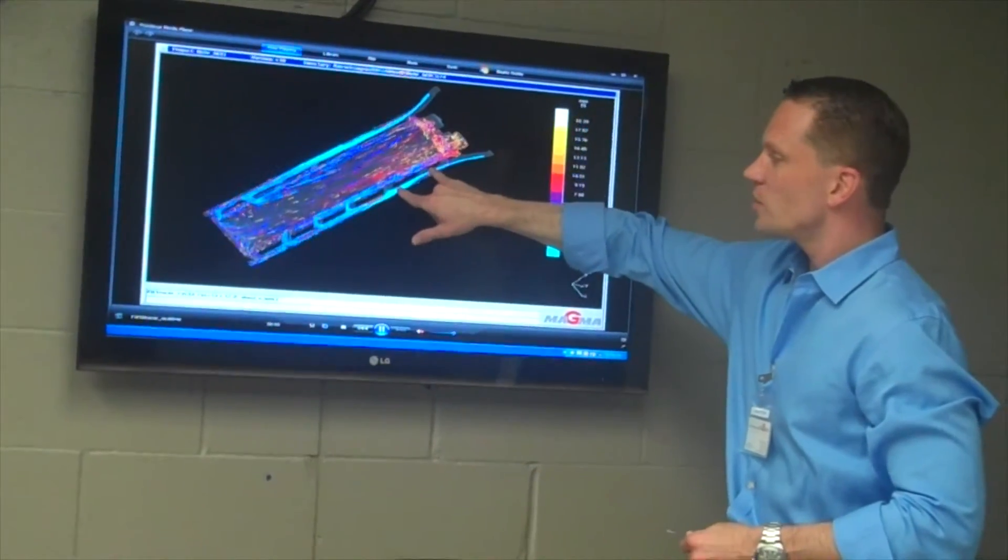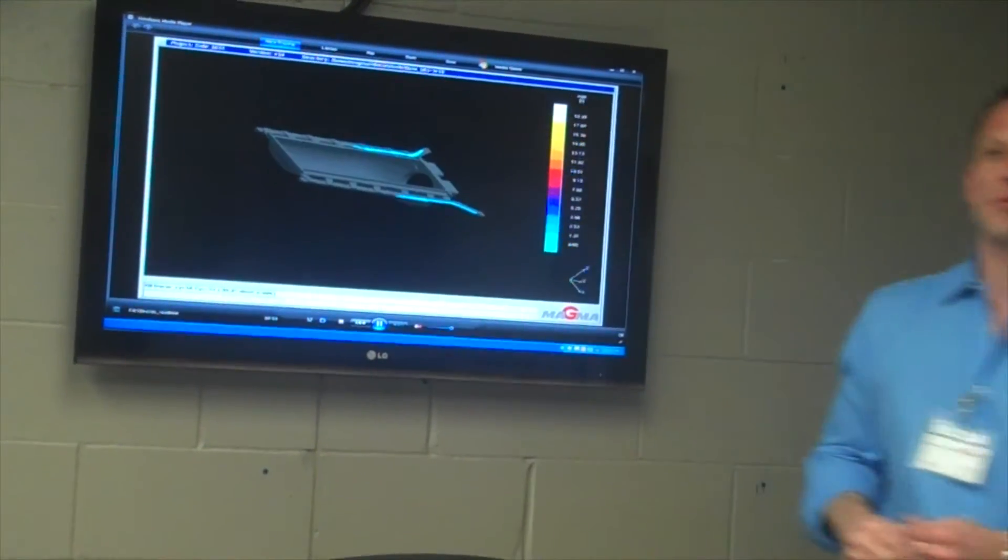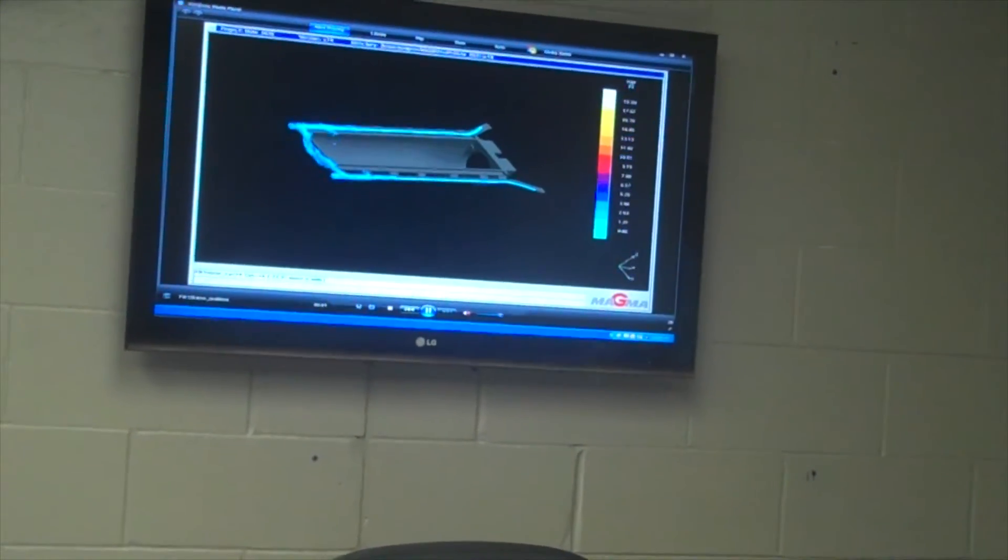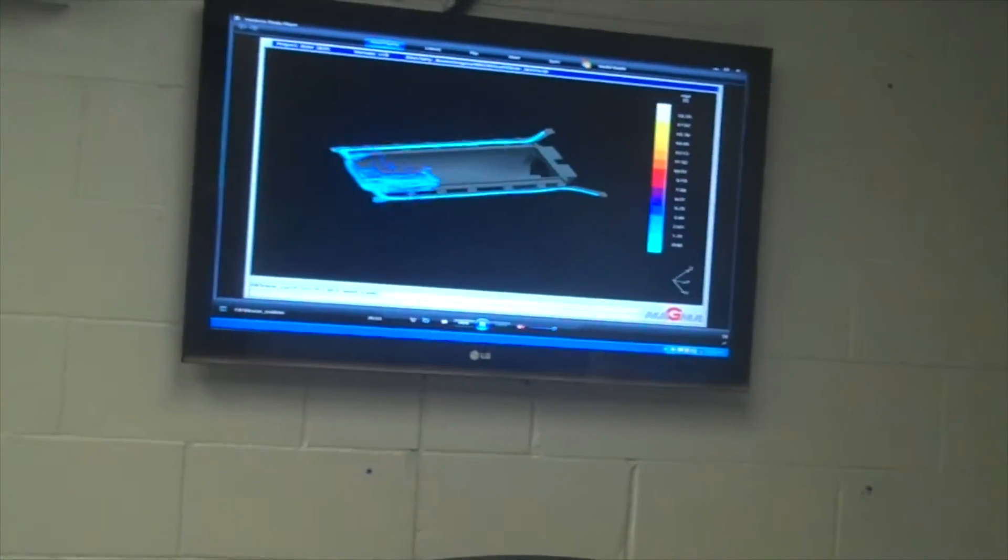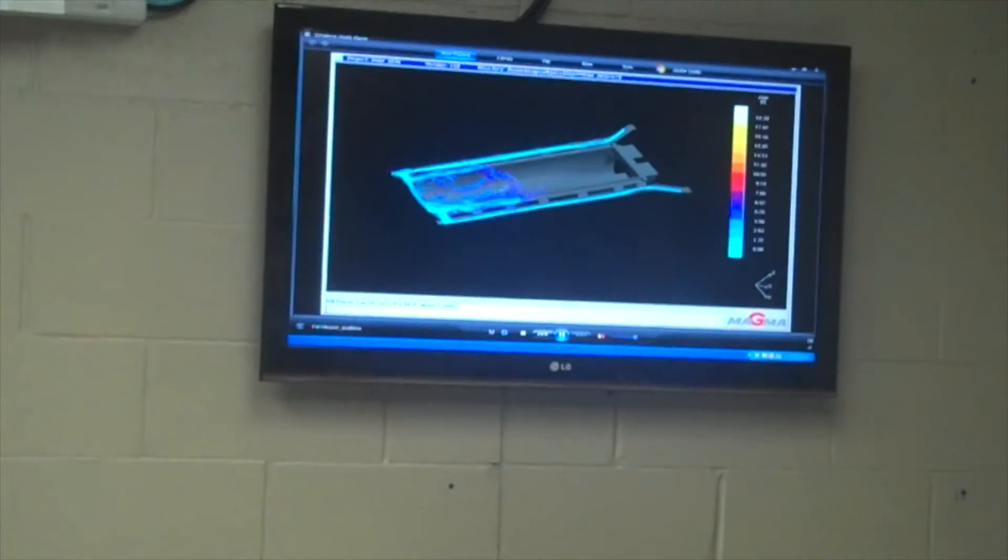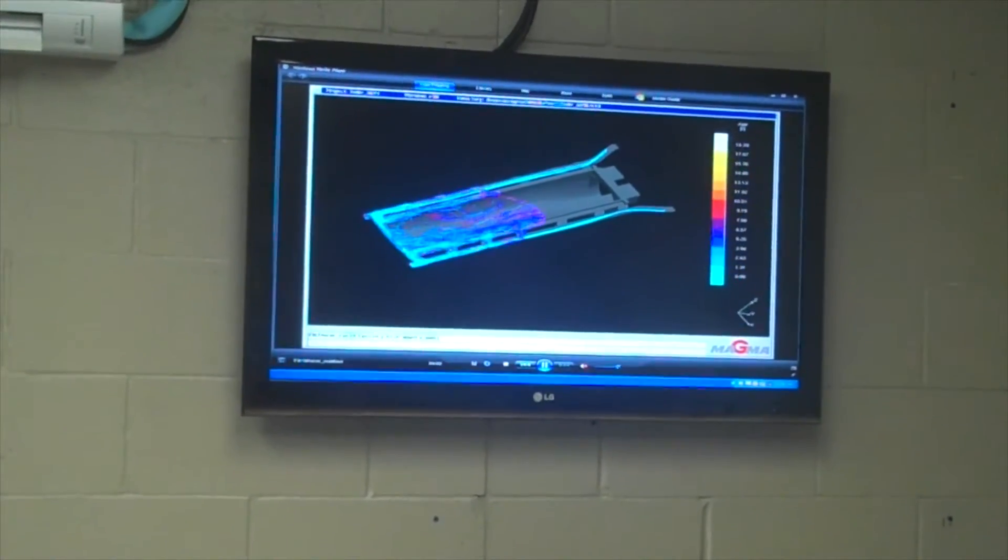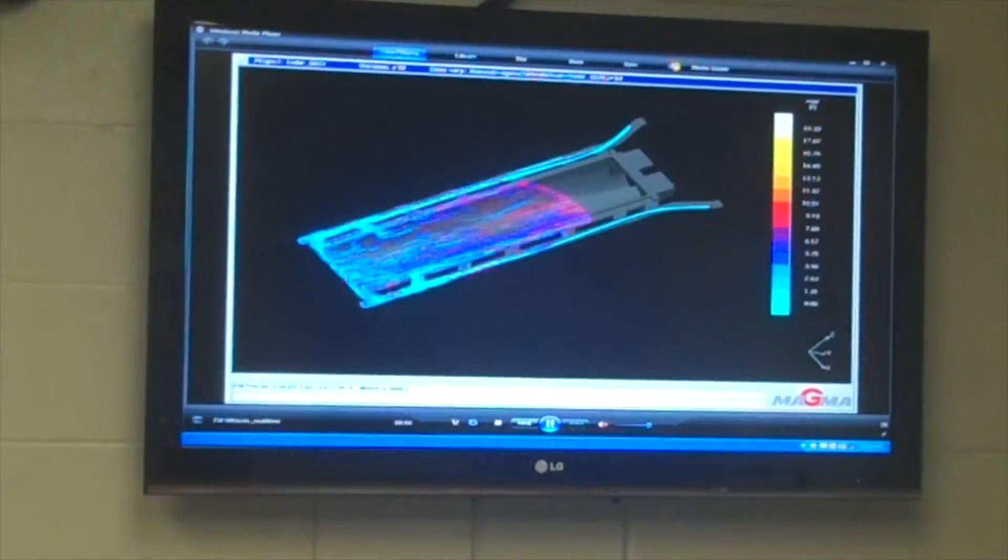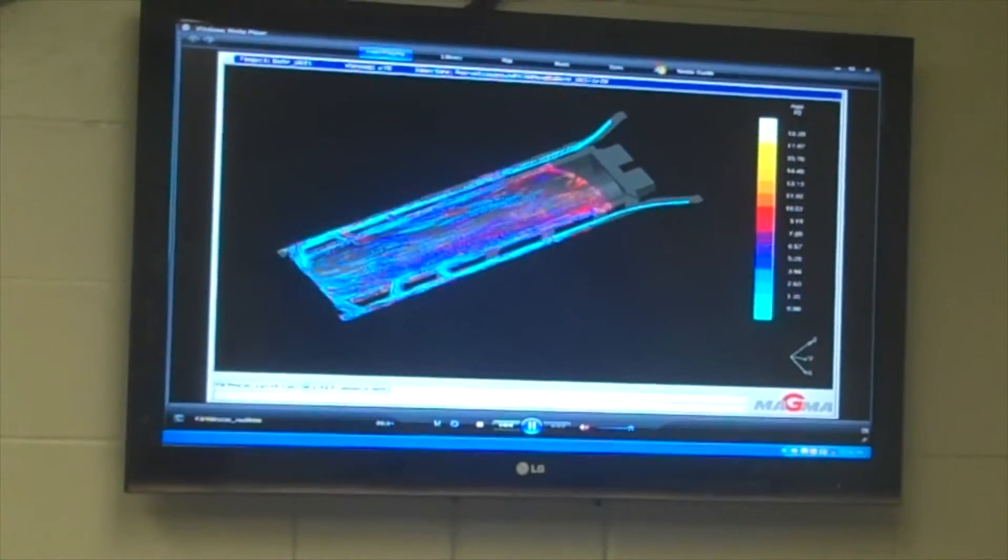So actually, maybe those two ingates can maybe actually be removed. You're correct. That's something that Jason would go through with one of the designers and talk about as far as what the results mean and how it, what we're learning from it and what we can use it for.